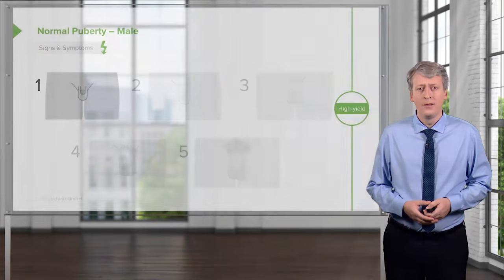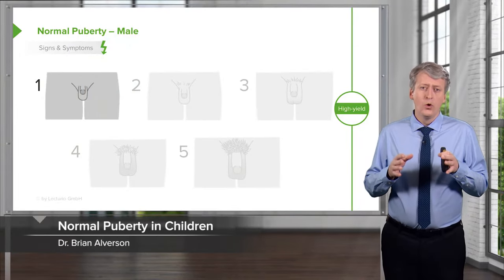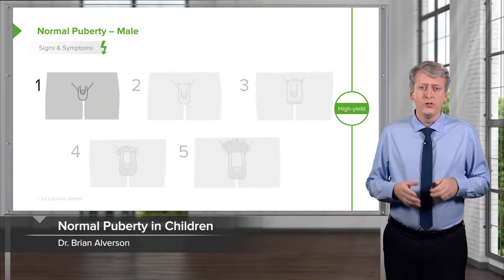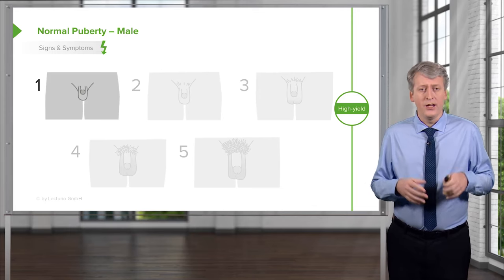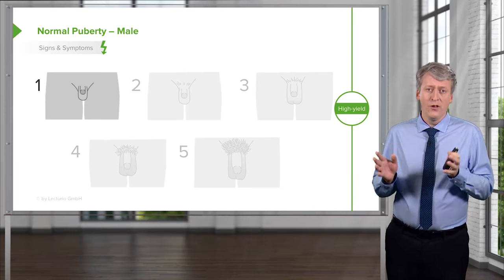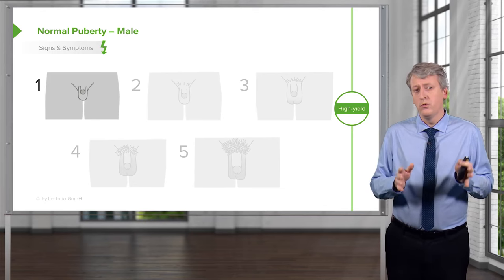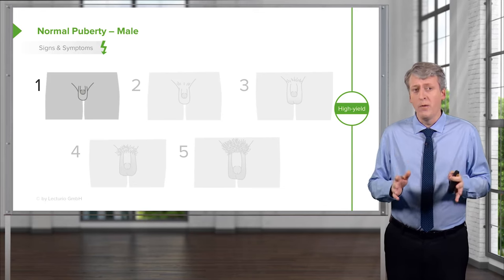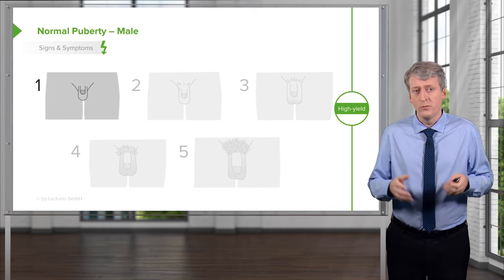In this lecture, we're going to discuss normal and delayed puberty in children. In order to understand normal puberty, we should start off with the Tanner stages. The Tanner stages are stages of puberty development that we use to measure and talk about how developed a patient is in terms of their puberty.